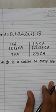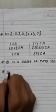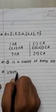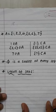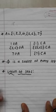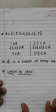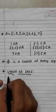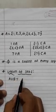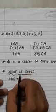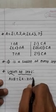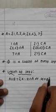Our next topic is union. The definition of union: let A and B be any two sets. The union of A and B is the set of all those elements which are either in A or in B or in both A and B. It is denoted by A union B. Symbolically, A union B equals the set of X such that X belongs to A or X belongs to B.